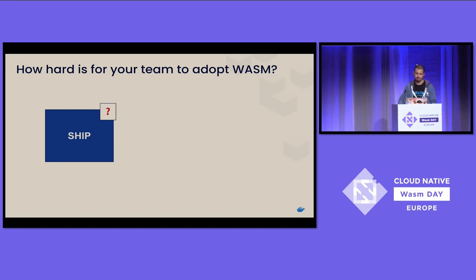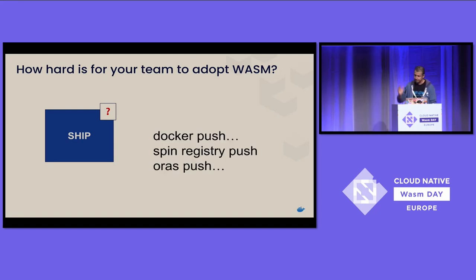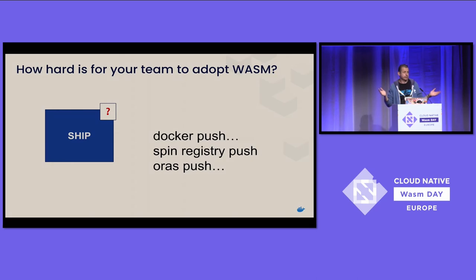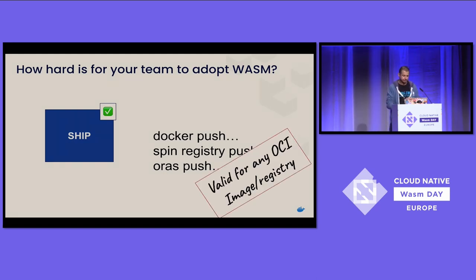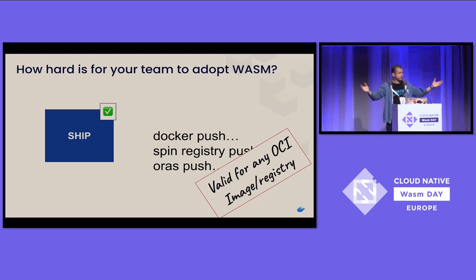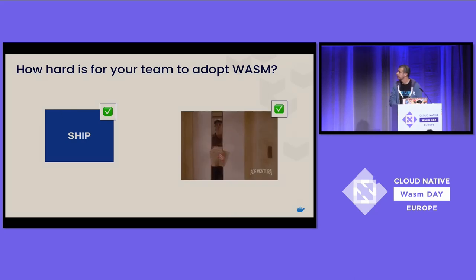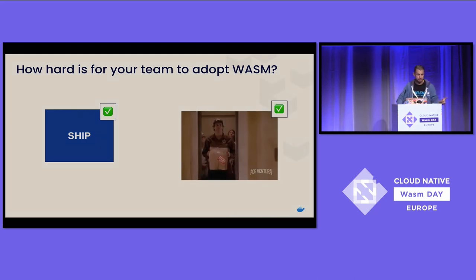What about shipping? We can do a registry push — it would be nice to just do a spin push. But it seems we can do the same thing. Once you have the OCI image, if we package the Wasm module as an OCI image, then magic happens — we can reuse all the existing registry infrastructure. There's nothing new here. Shipping — check.